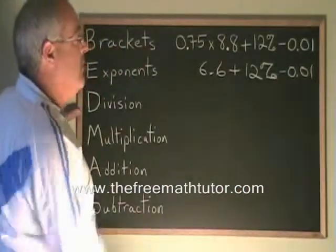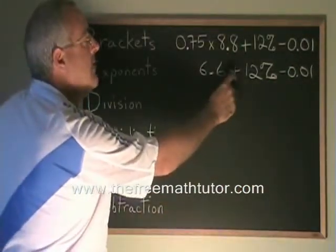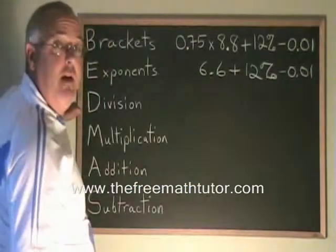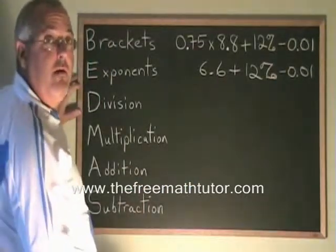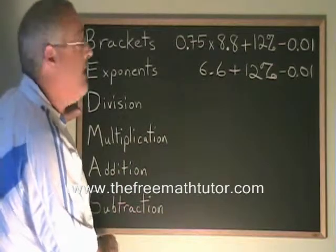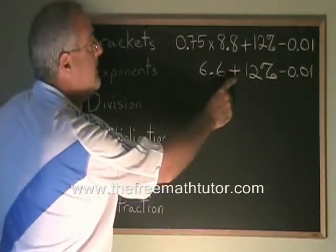The next operation we will do is this one because we have an addition and a subtraction. They are in a tie. The tiebreaker is, which one do you get to first when you read from left to right? This one comes first.